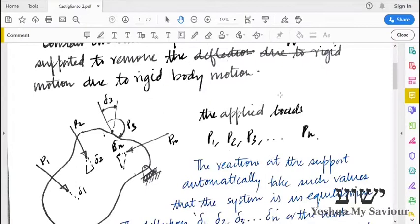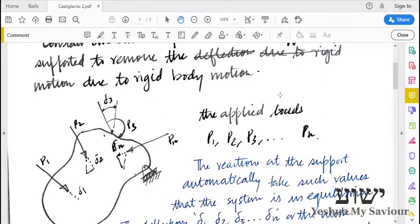So due to these loads, it will have displacements. Displacements are represented by corresponding numbers: delta 1, delta 2, etc.